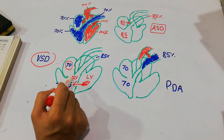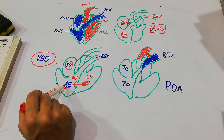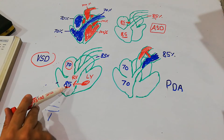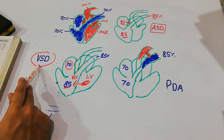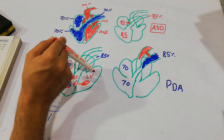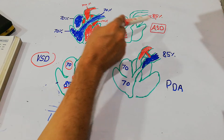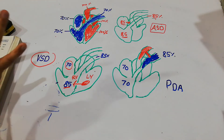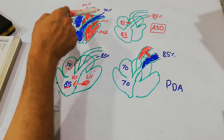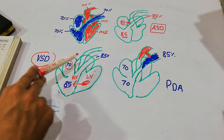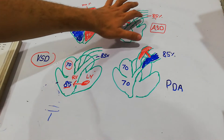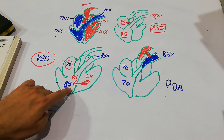The saturation in the right ventricle increases from 70 percent — normal — to 85 percent, which is elevated due to VSD. The saturation of the left atrium, left ventricle, and aorta will remain 100 percent in both ASD and VSD. Saturation changes occur in the right atrium, right ventricle, and pulmonary artery in ASD, but only in the right ventricle and pulmonary artery in VSD.